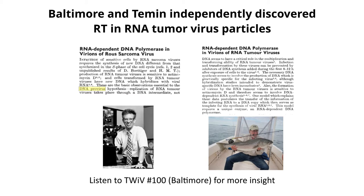Even today, reverse transcriptase is essential. You don't really need it to clone genes anymore—you can synthesize them chemically as DNA. But if you want to do PCR and look for RNA viruses, such as Zika, how do you do PCR on an RNA virus genome? PCR is a DNA-based amplification, so you first take reverse transcriptase and make a DNA copy, and then you amplify it by PCR. That's why it's called RT-PCR—reverse transcription PCR. This enzyme is incredibly important. Every lab has some reverse transcriptase in the freezer.